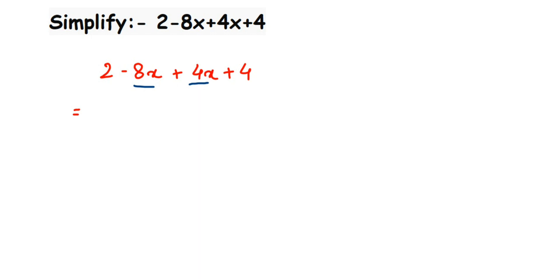So first here, 2 + 4 - I'm going to add the constants. Or you can rearrange in this step. Let me rearrange it: 2 + 4, and then I'm going to write it as -8x + 4x. I'm not changing the signs, I'm just rewriting it.